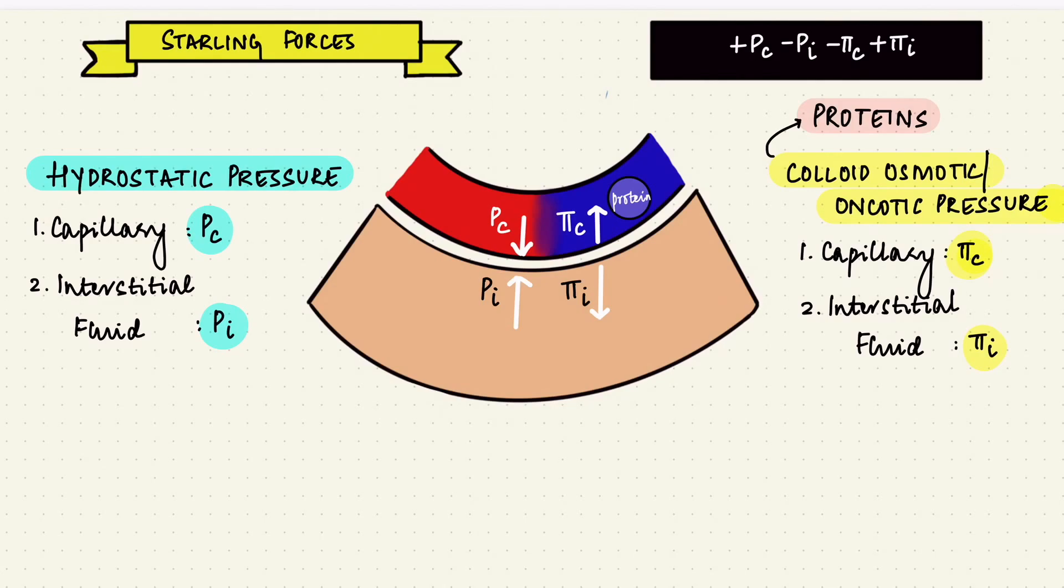So if we put this whole thing together, that gives us the net filtration pressure. If this value is positive, it means that there's net filtration of fluid from the capillary to the interstitium. While if it's negative, that means the direction of flow is towards the capillary, which is reabsorption.